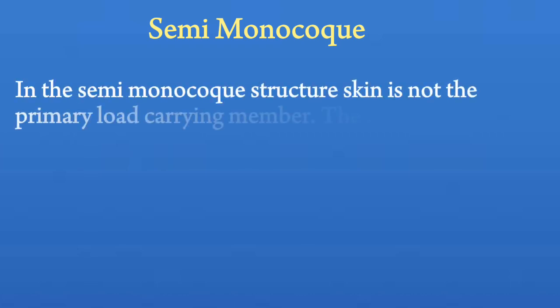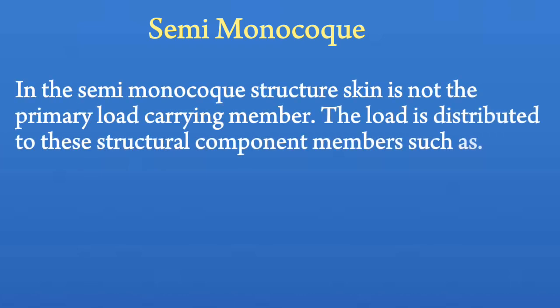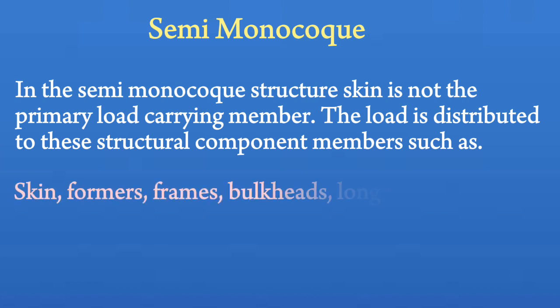In the semi-monocoque structure, the skin is not the primary load-carrying member. The load is distributed to these structural component members such as skin, formers, frames, bulkheads, longerons, and stringers.